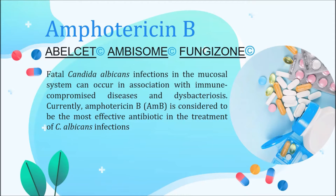Drug names of Amphotericin B in Turkey are Ablacent, Ambisome, and Fungizone. Candida albicans is one of the major human fungal pathogens which usually causes oral mucosal infections. Such infections are difficult to eradicate and may emerge as lethal depending on the immune status of patients. Particularly, patients with immunocompromised diseases such as AIDS and cancer are life-threatened by the infection of C. albicans.